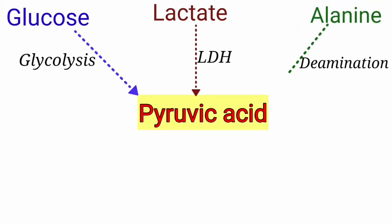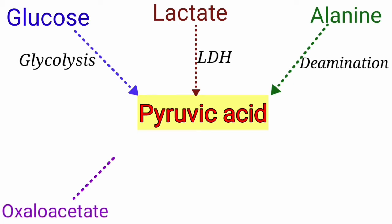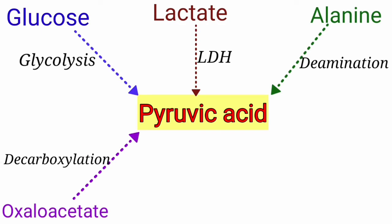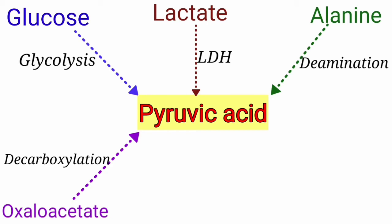Deamination of alanine leads to formation of pyruvic acid. It is formed from oxaloacetate by decarboxylation — decarboxylation of the dicarboxylic ketoacid oxaloacetic acid — which can be spontaneous decarboxylation or catalyzed by the enzyme oxaloacetate decarboxylase, forming pyruvic acid.